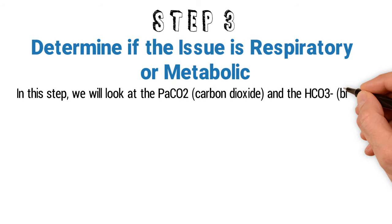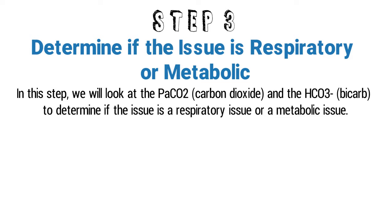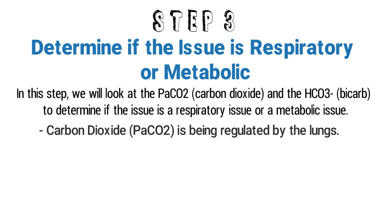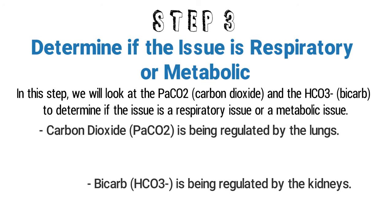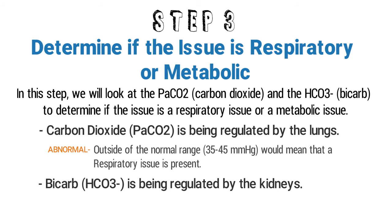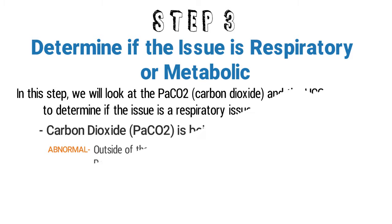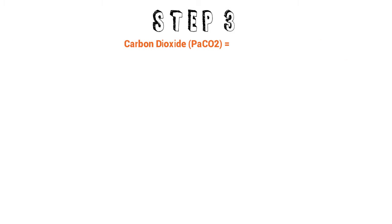In this step, we'll look at the carbon dioxide and the bicarb in order to determine if the issue is a respiratory issue or a metabolic issue. Remember these two tips: carbon dioxide is being regulated by your lungs, whereas bicarb is being regulated by your kidneys. If the carbon dioxide value is abnormal — meaning it falls outside the normal range — while the bicarb value is normal, this would mean that you have a respiratory issue. If the carbon dioxide value is normal while the bicarb value is abnormal, this would mean that you have a metabolic issue. Basically, more carbon dioxide equals acidosis; more bicarb equals more basic.